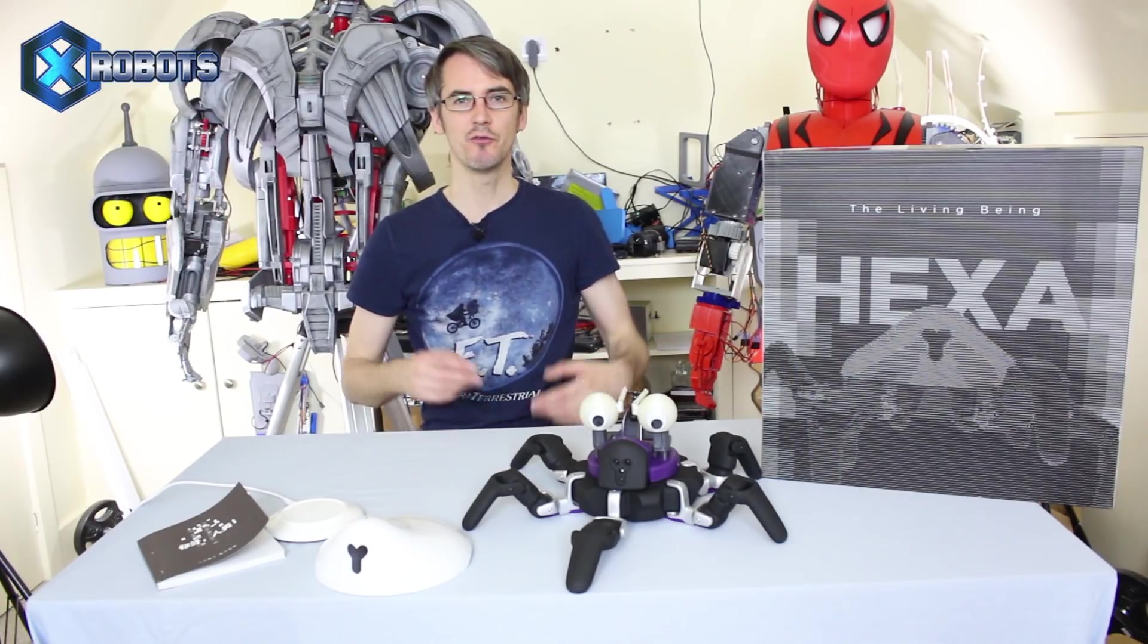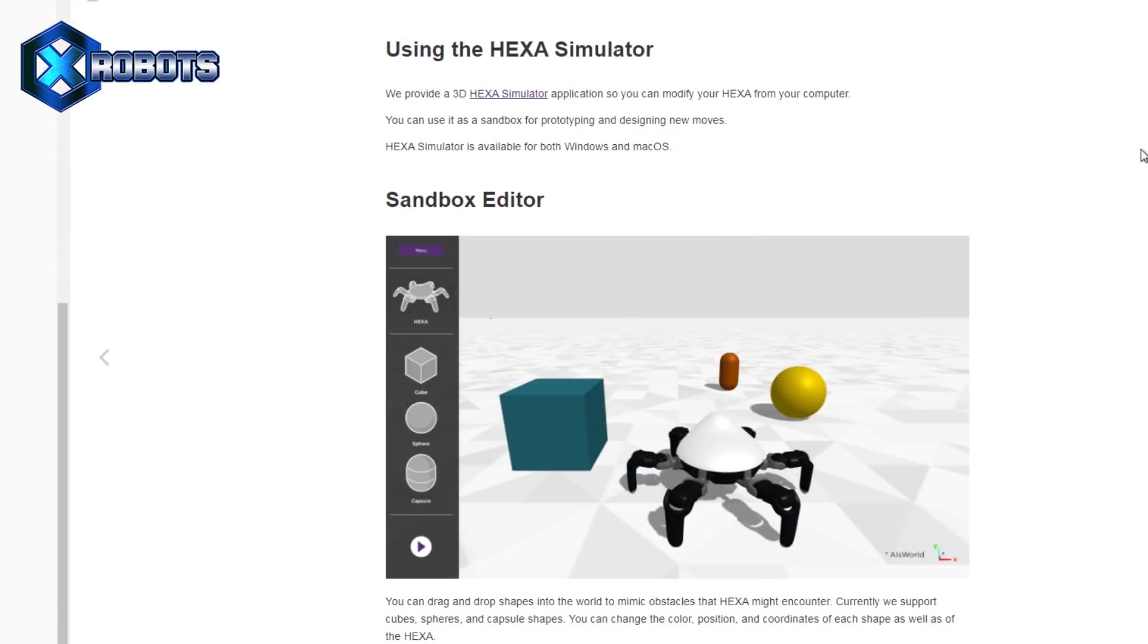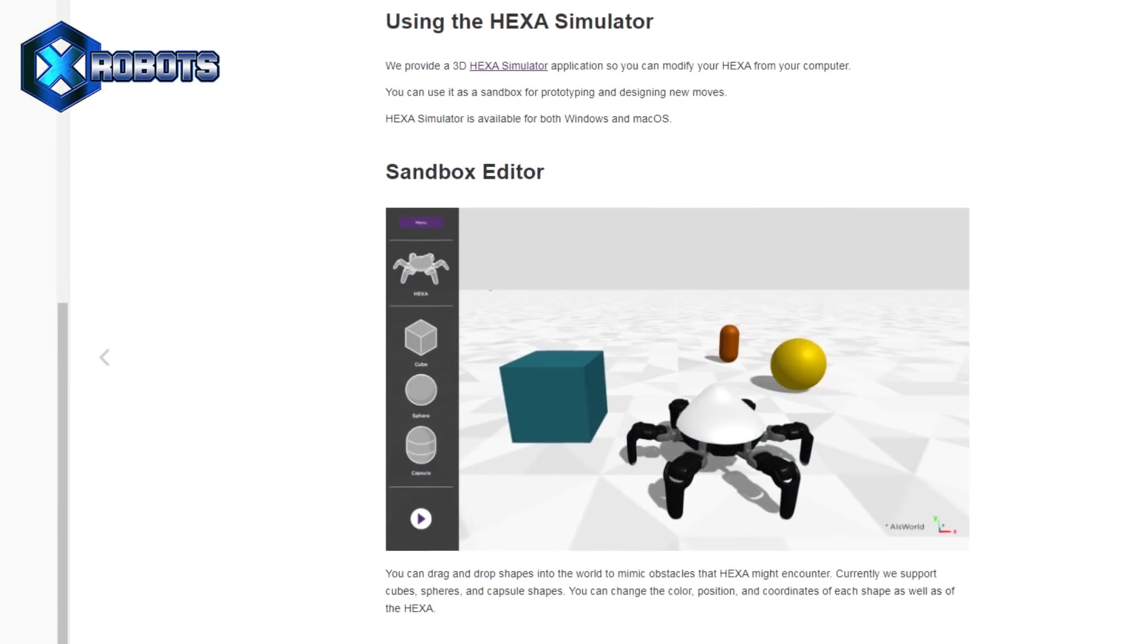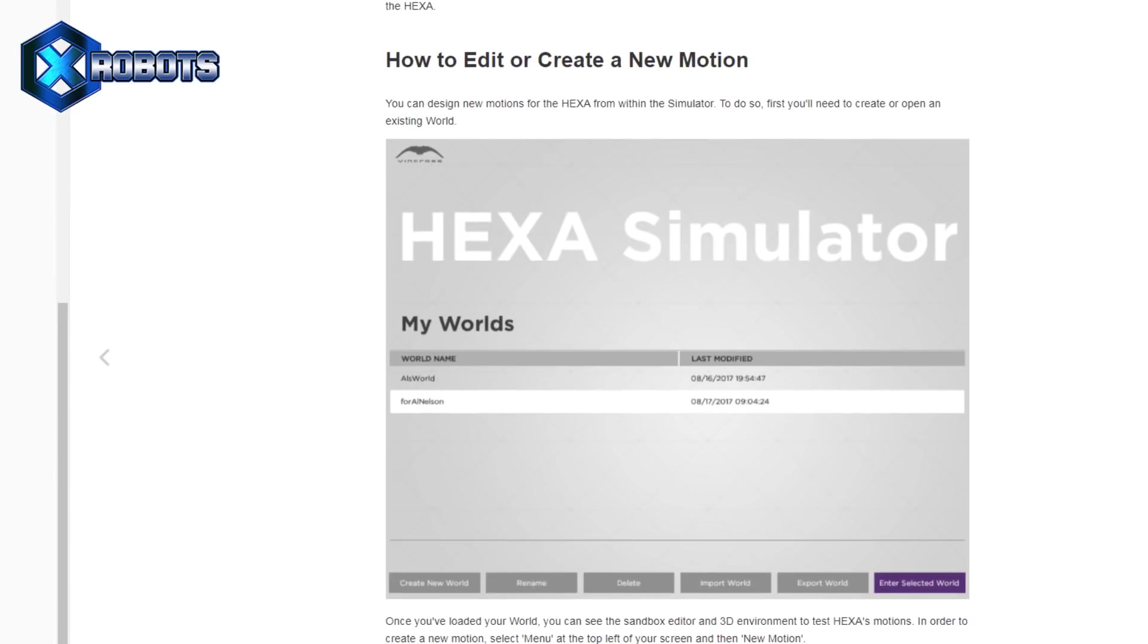All right, so that's the end of the video. Don't forget to check out the Vincross website for information on the SDK. There's also something called Hexa Simulator that you can download and play with a virtual Hexa if you haven't got the real hardware. So as I say, the product's available to purchase now and it's going to ship in December. Check out the link in the description to this video.